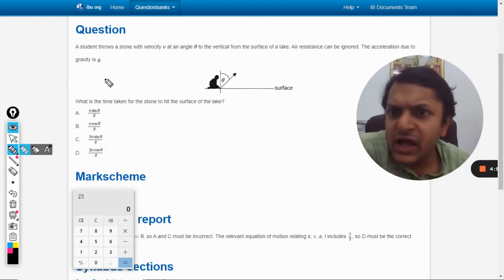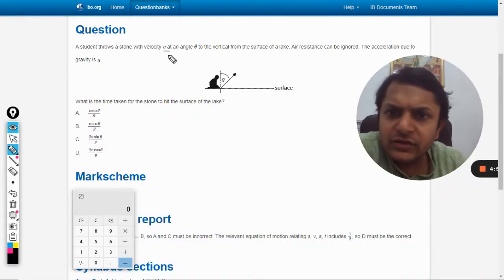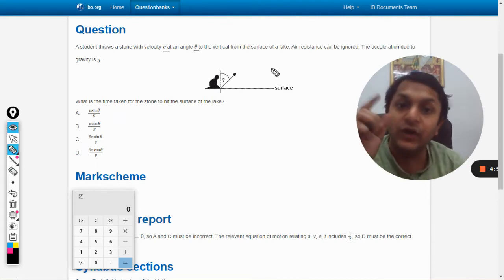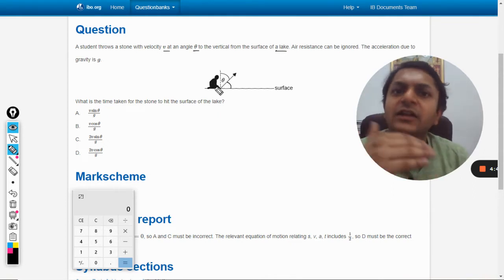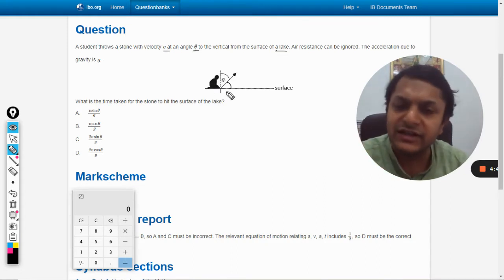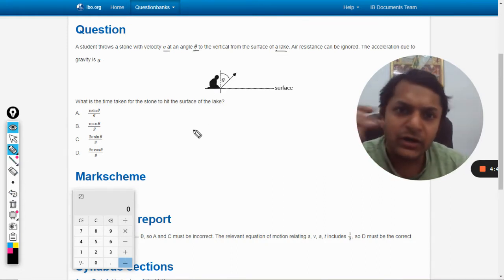In this question, a student throws a stone with velocity v at an angle theta to the vertical from the surface of a lake. Now this is different because generally we take theta as the horizontal angle, but they have taken the other angle—the angle with the vertical as theta.